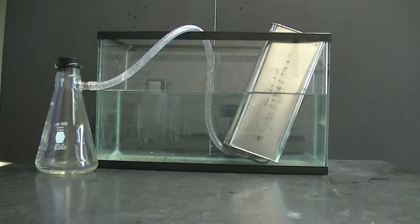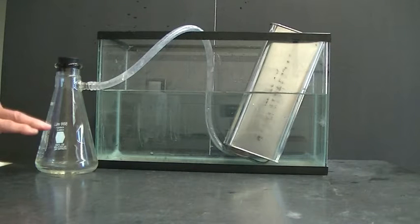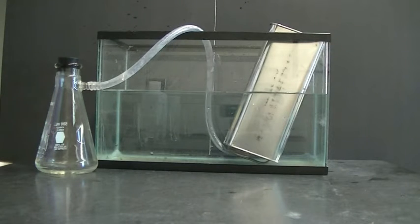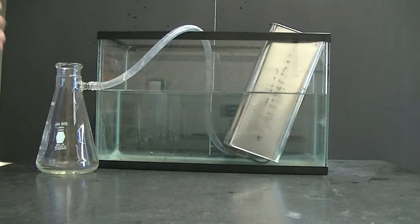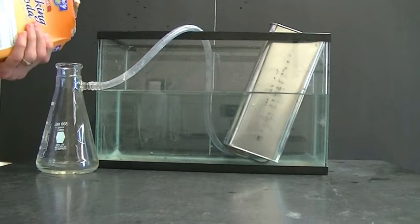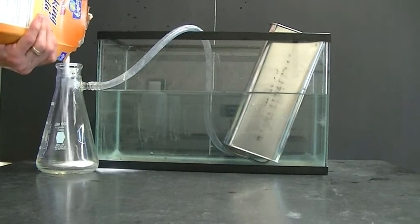Now we're going to react baking soda and vinegar in our side arm flask and collect the gas produced inside this can. This will get a little messy but the job here is just to collect CO2 in our metal can.